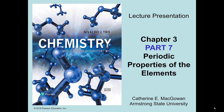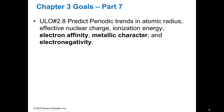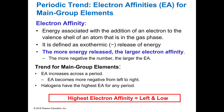Welcome back to chapter 3. This is the final part or discussion of periodic properties of the elements. In part 7 we're going to look at the final trends: electron affinity, metallic character, and electronegativity, and we're going to use our left-and-low and high-and-right rule.